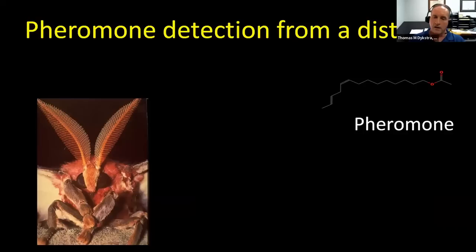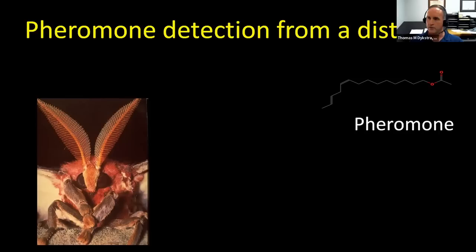I left you hanging on presentation number two. I was talking about pheromone detection from a distance — probably less than three millimeters, possibly even less than one millimeter, but still from a distance. The pheromone gives off frequencies, and it's these frequencies which I propose are being picked up by the antenna. I talked about a little bit of the possible biophysics in presentation two.